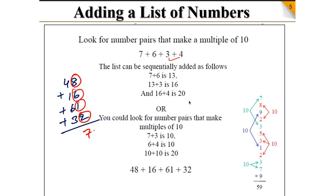I write 7 here and the carryover is 1. Now for the tens digits I find pairs: 4 plus 6 is 10, then add 30, 40, and 50. The answer is 157. Now tell me — is the first method easy or the second method easy? The second method is easy. Good. So you have to find the pair.